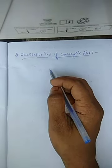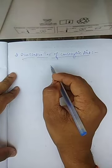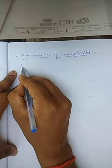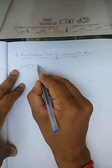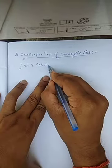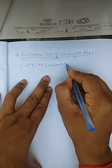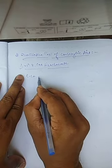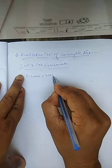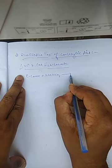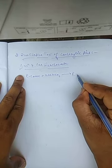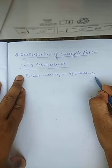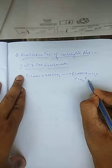For the qualitative test of carboxylic acid, we may use plenty of reactions, but the major reactions used for identification are: first, reaction with sodium bicarbonate. So what happens when any carboxylic acid is reacted with sodium bicarbonate? It forms the sodium carboxylate salt.